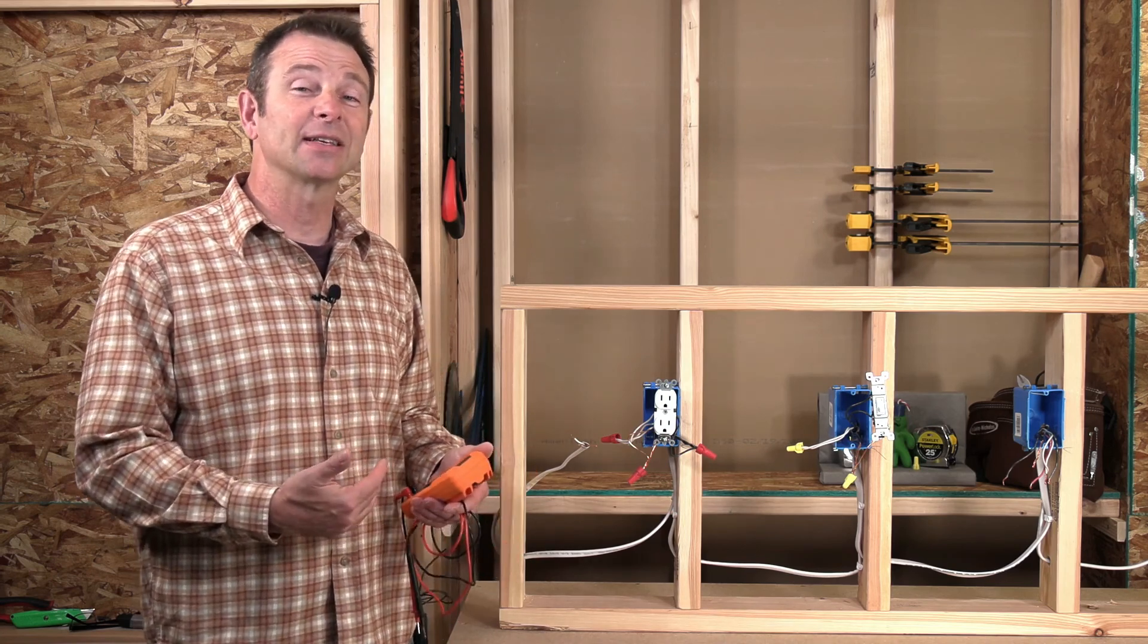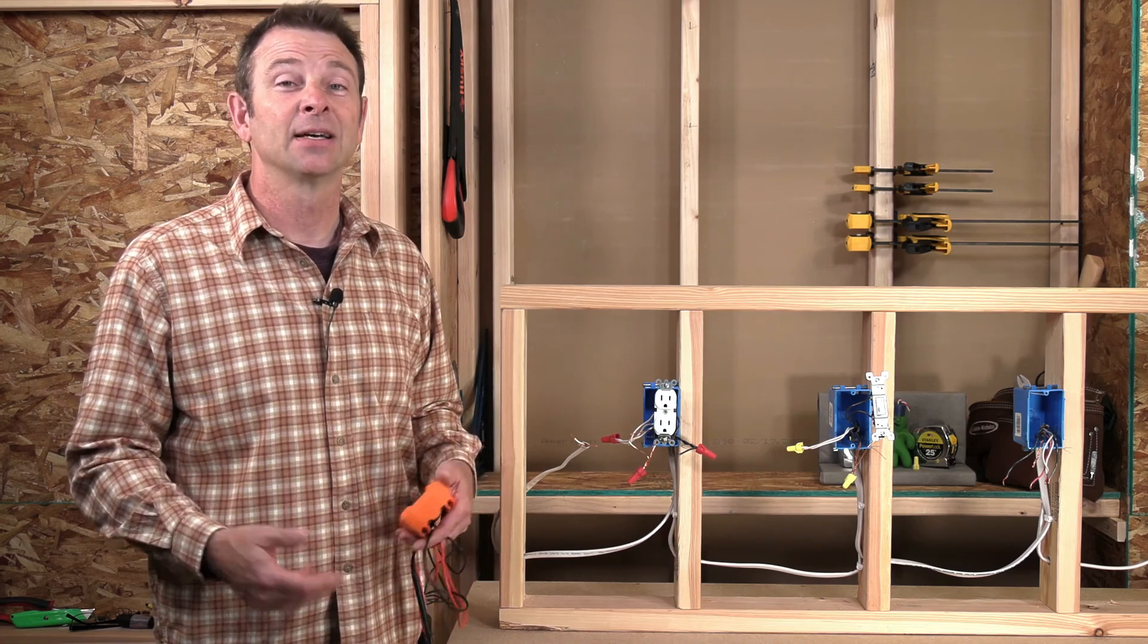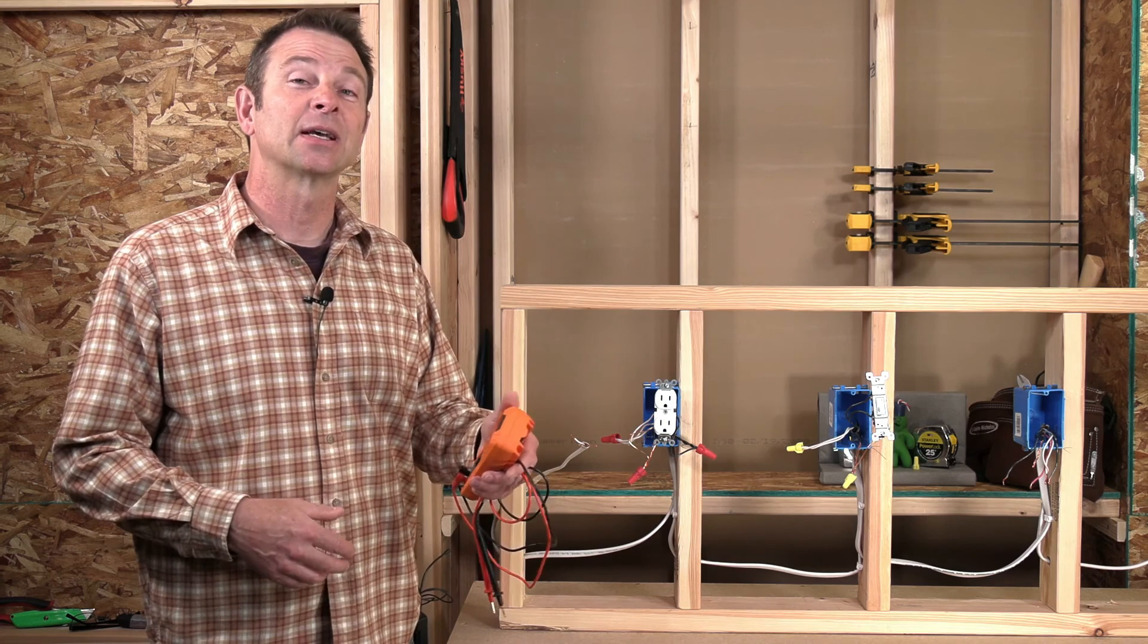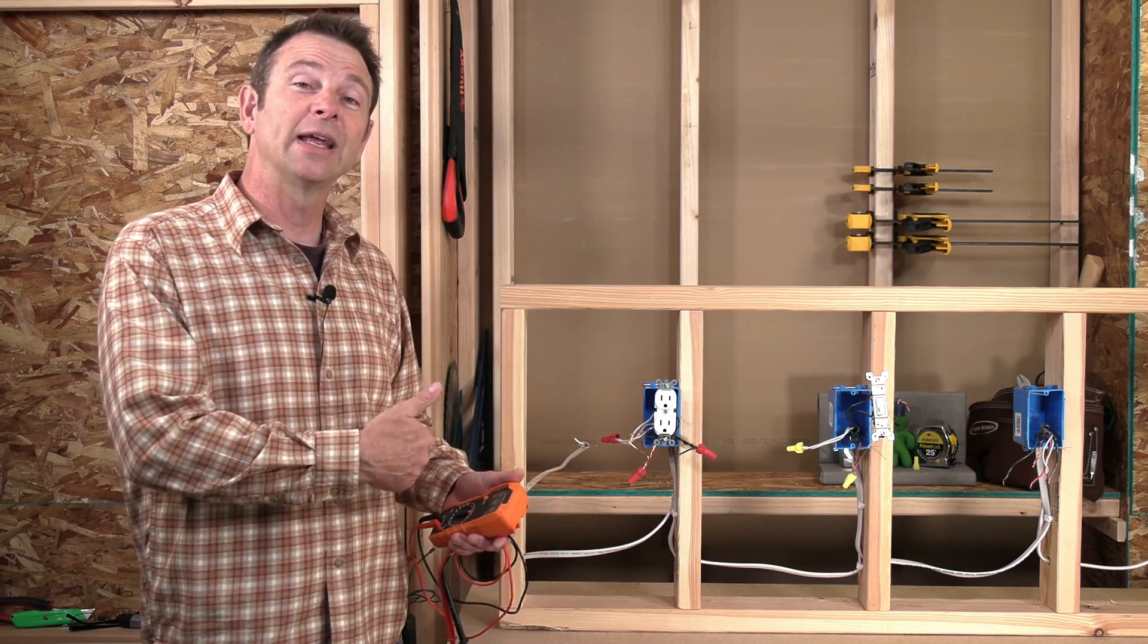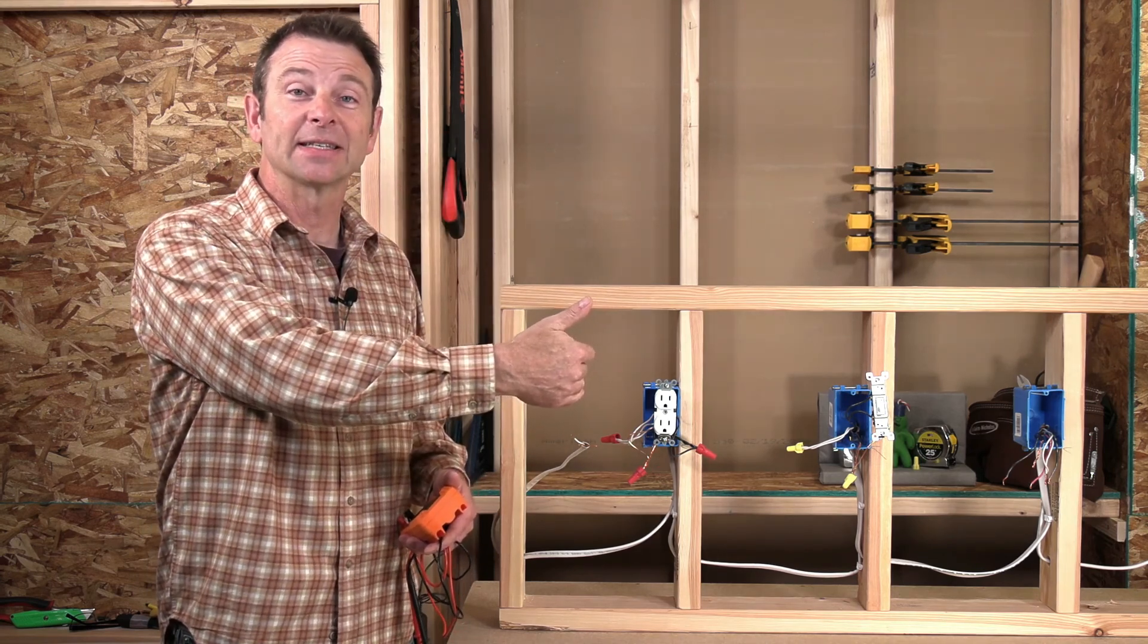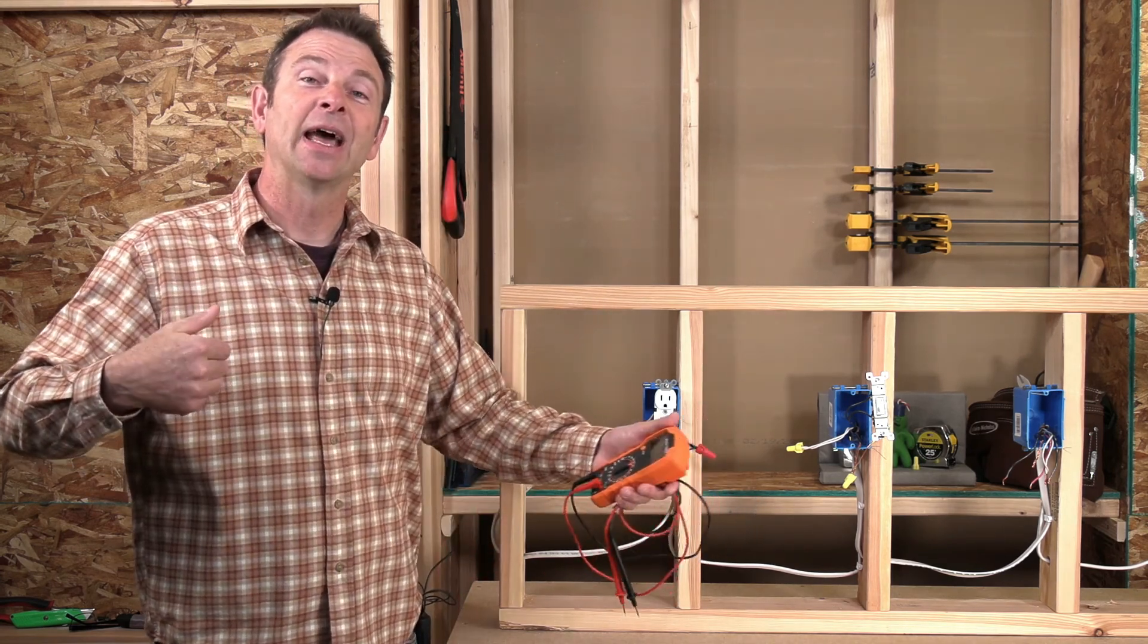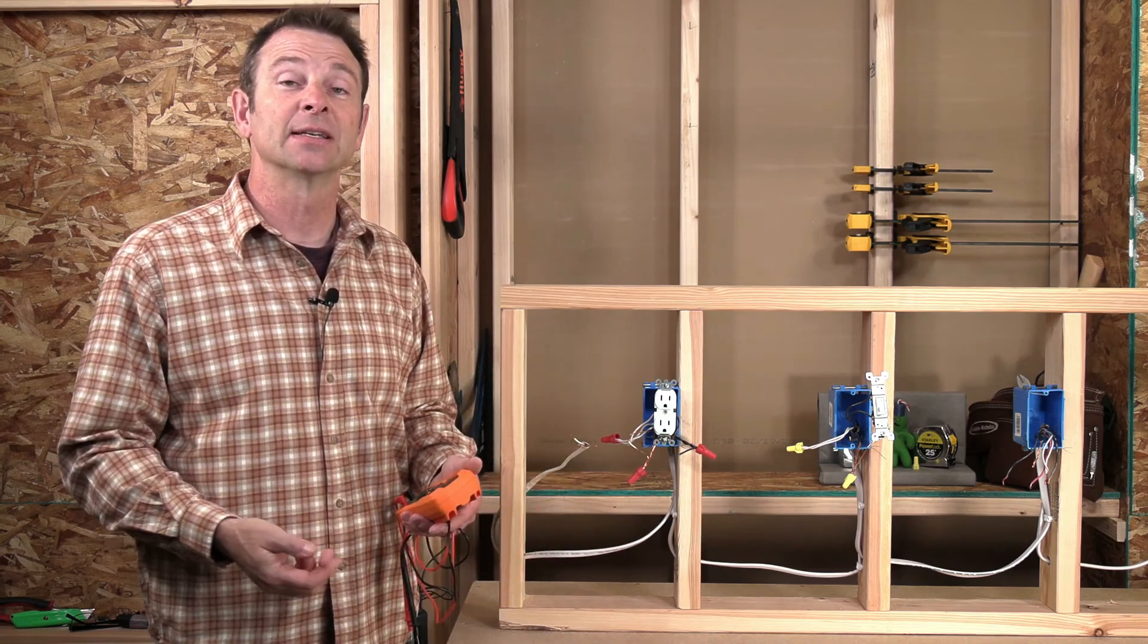Keep in mind, we're not energizing this circuit, so we're going to use what's called a resistance test. Resistance is going to check to make sure that there is continuity or a continuous path from one end of a conductor to whatever other end that we're testing so there can be a continuous flow of current through that conductor when we do energize it.